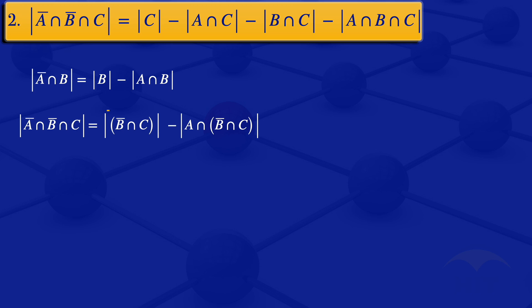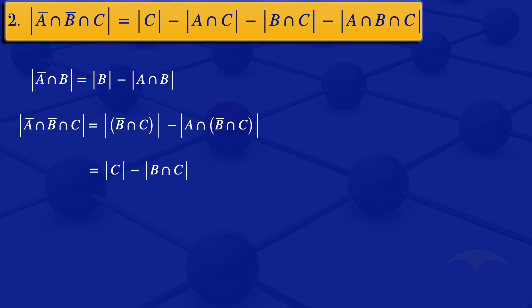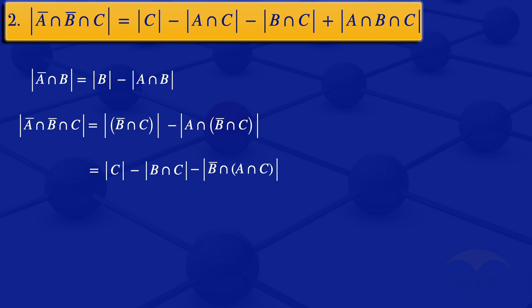Looking at the first part, the cardinality of B complement intersection C, we can apply the same formula we just proved. In that formula, where we have A we put B, and where we have B we put C. So that expression becomes the cardinality of C minus the cardinality of B intersection C. Moving to the second part, the expression inside the cardinality can be rewritten using the associative law for sets: A intersection B complement intersection C becomes B complement intersection A intersection C.